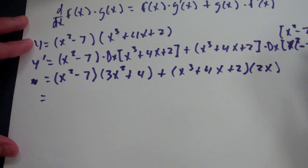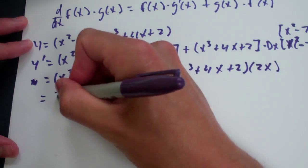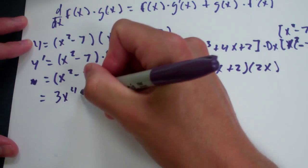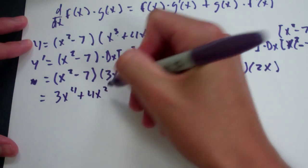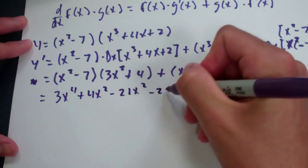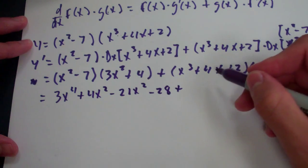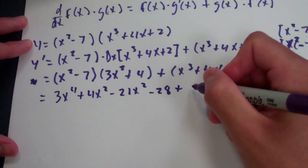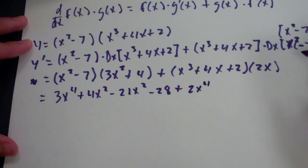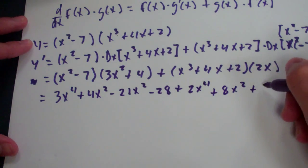So, let's go ahead and simplify that. Let's go ahead and multiply this out here. So, we have 3x to the 4th, plus 4x squared, minus 21x squared, minus 28, plus, and then I'm going to go ahead and distribute that as well. So, plus 2x to the 4th power, plus 8x squared, plus 4x.